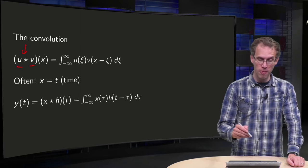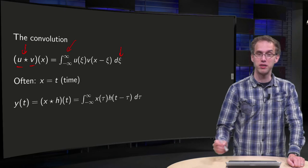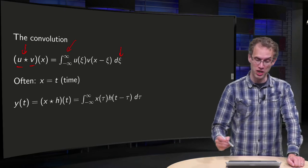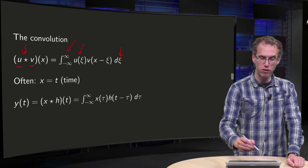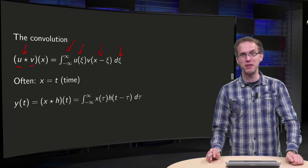So what do we have to do? You use xi as a dummy integration variable, you integrate from minus infinity to infinity with respect to xi. You plug in u of xi times v of x minus xi. So that is the definition.